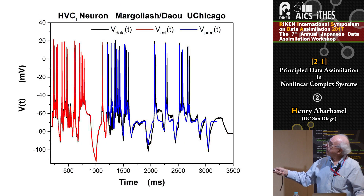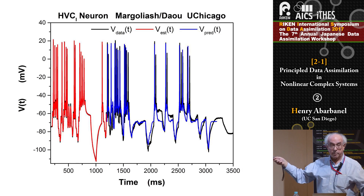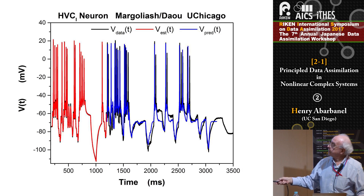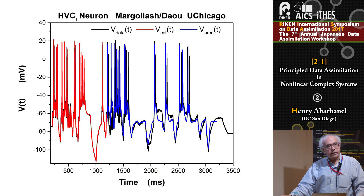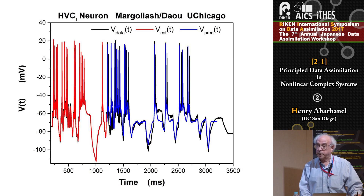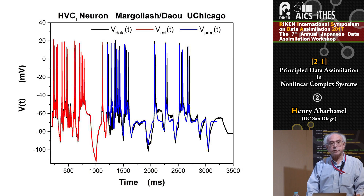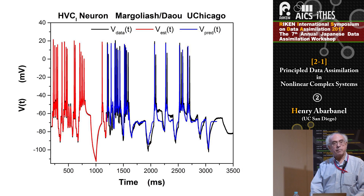Here, what we see is for an interneuron — a neuron that modulates activity without projecting signals out to other parts of the avian song system. You get an extremely good representation of the voltage in the region in which you're making the measurements. You have no idea what the other variables are — they can't be measured — and yet you get an extremely accurate representation of the prediction as well, shown in blue. That tells you that you have determined both the parameters in the model and the full state of the model, measured and unmeasured variables, at the end of the measurement window at about 1.5 seconds.